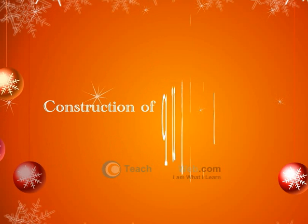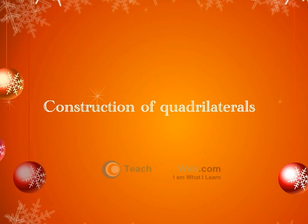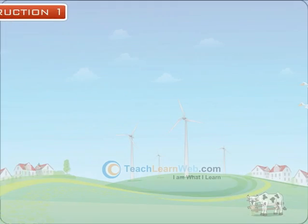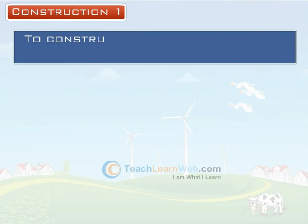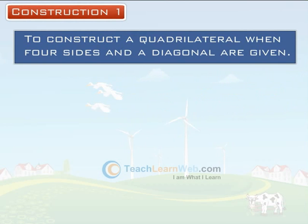Construction of Quadrilaterals. Construction 1: To construct a quadrilateral when four sides and a diagonal are given.